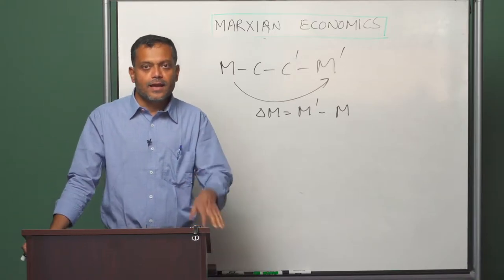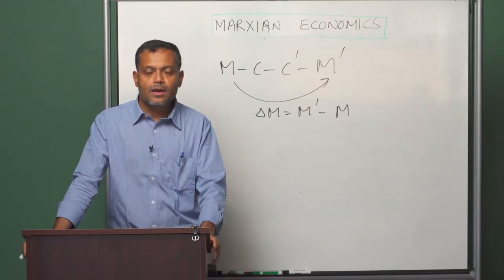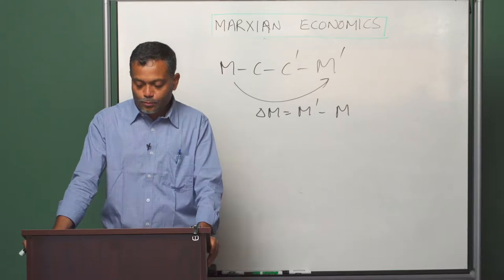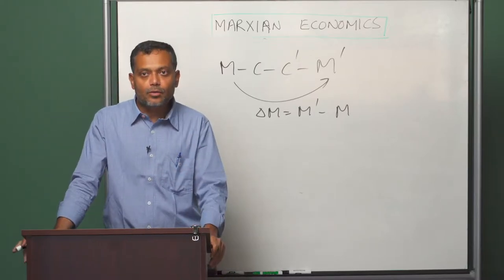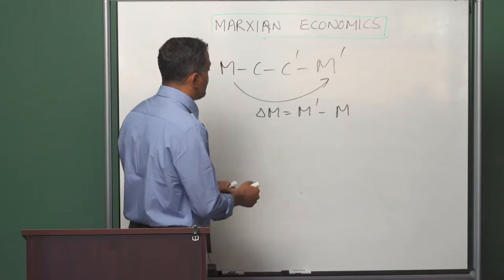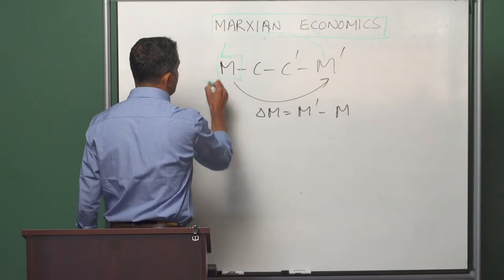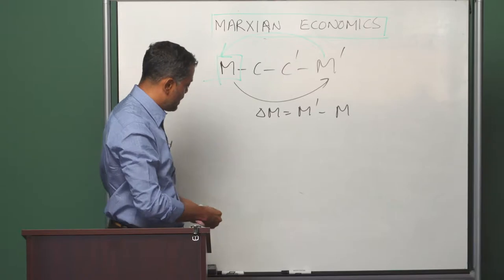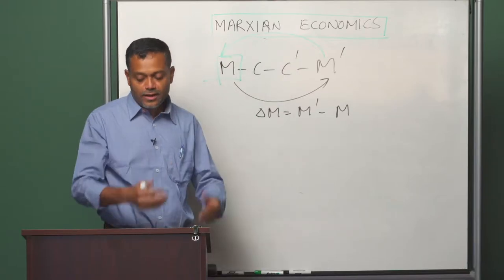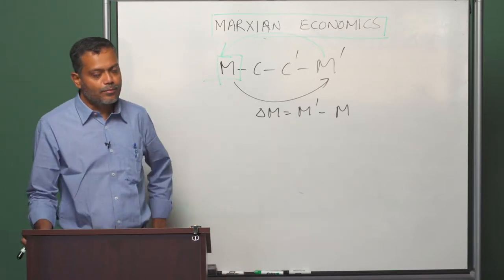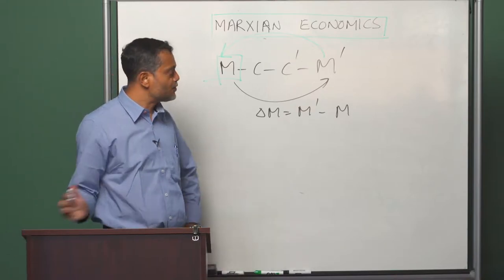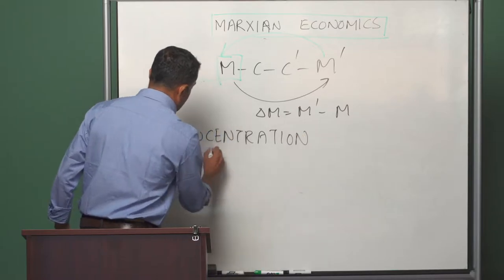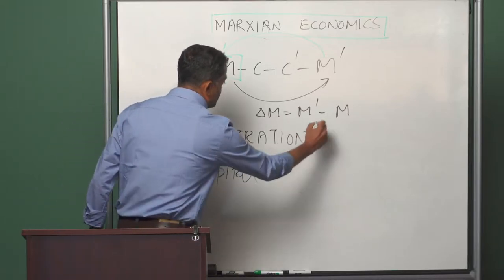No matter which we are considering — accumulation of capital or expanded reproduction — whenever there is reinvestment of surplus value it increases the scale of capital and the scale of the production process. The size of capital involved increases because the surplus value that was generated is reinvested, so the amount of capital at the beginning of the next cycle of production is bigger than in the previous cycle. The size of capital value in the production process can increase through two methods: one which Marx calls the concentration of capital, and the other which Marx calls the centralization of capital.